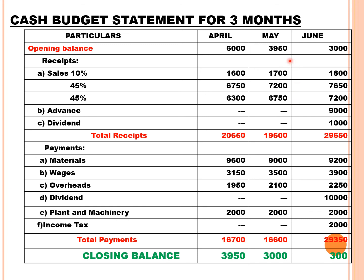Rs. 3,950 becomes the opening balance for May. Sales receipts for May: Rs. 1,700 cash sales, Rs. 7,200 from April credit, Rs. 6,750 from March credit. Total receipts: Rs. 19,600. Material payment for May is March's material. Wages and overheads as per working notes. No dividend payment in May. Plant and machinery installment Rs. 2,000. Total payments: Rs. 16,600. Closing balance for May: Rs. 3,000.